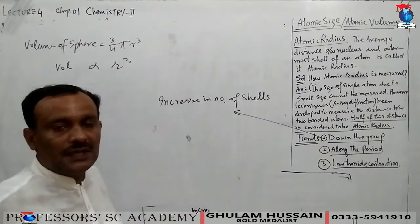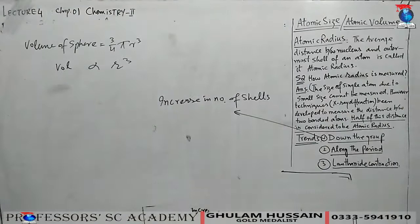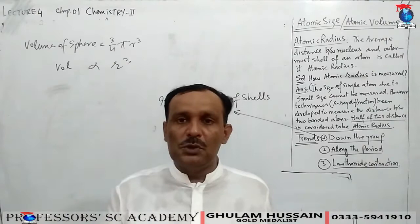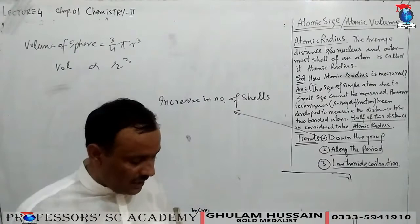As you go down a group, the period number increases, adding more shells. Lithium is in the second period, sodium is in the third period — one more shell. Potassium is in the fourth period — four shells. As the number of shells increases, automatically the atomic radius increases. A second reason is the decrease in shielding or screening effect.